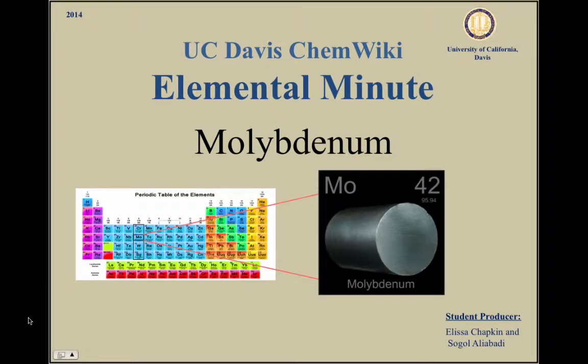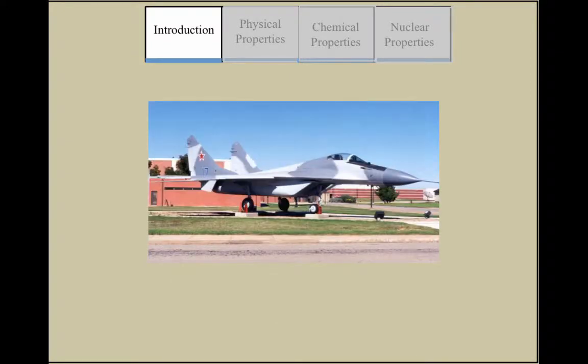Molybdenum is a transition metal whose name originates from a Greek word meaning lead. Molybdenum is used in fertilizers, in the making of steel alloys, and missile and aircraft parts.